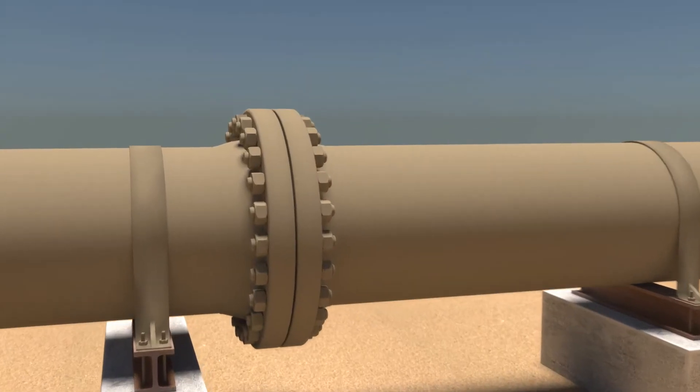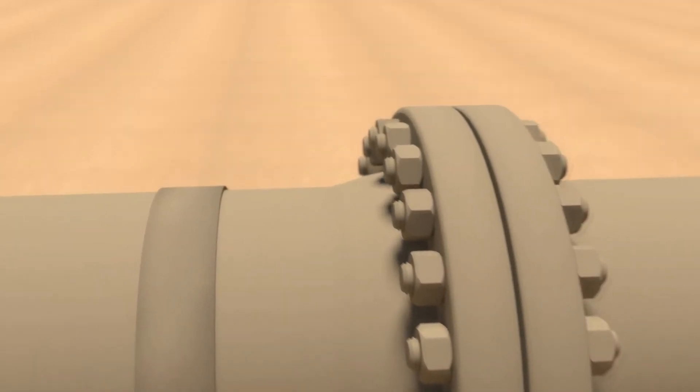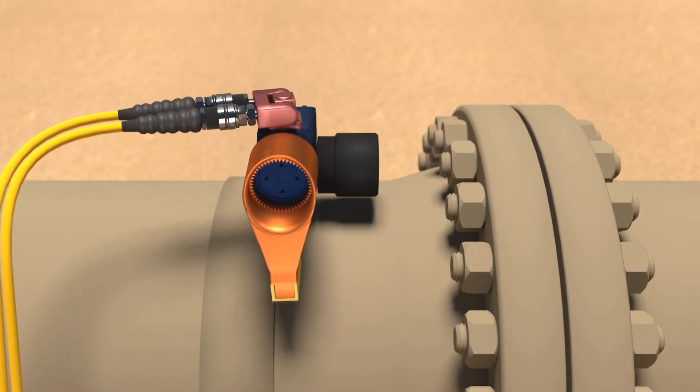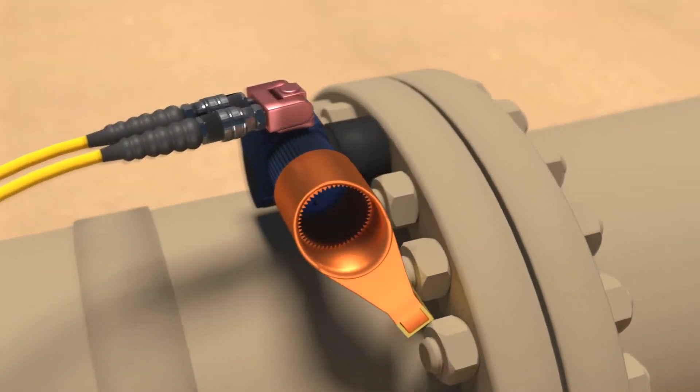Hydraulic torque wrenches are designed to exert torque on a fastener to achieve proper tightening or loosening of a connection through the use of hydraulics.